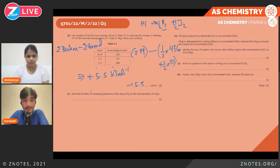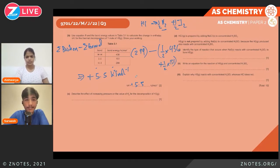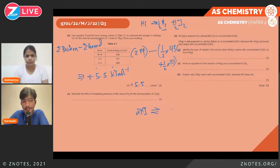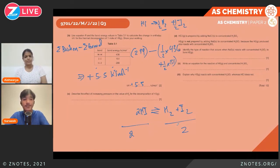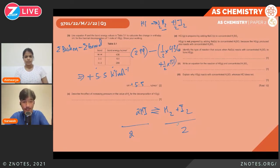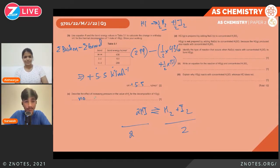Regarding the effect of increasing pressure on the value of Kp for the decomposition of HI: in the equation 2HI → H₂ + I₂, there are 2 moles of gas on the reactant side and 2 moles on the product side. Since there are equal numbers of moles on both sides, increasing pressure has no effect on the value of Kp.